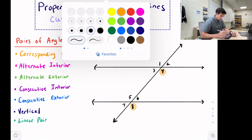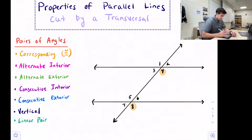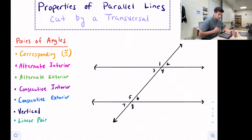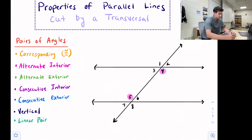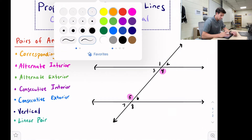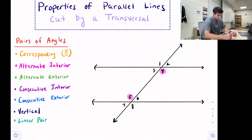The next type we're going to look at is alternate interior. Alternate means opposite sides of the transversal, which is our diagonal line cutting through the middle, and interior means on the inside of our parallel lines. So that's going to be angles three and six, or four and five. Those angles are considered alternate interior, and their relationship is that they are also congruent.